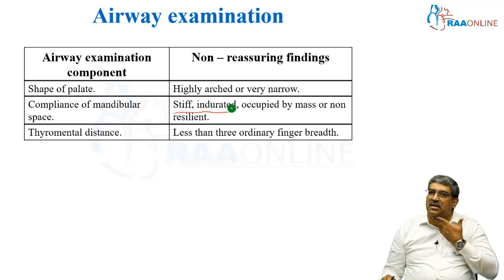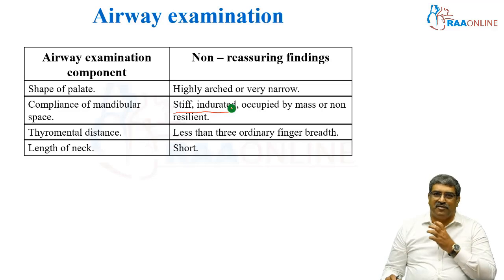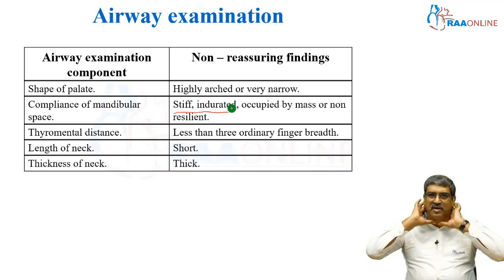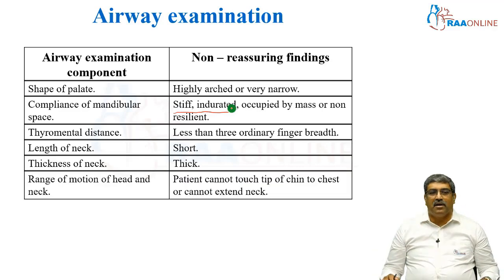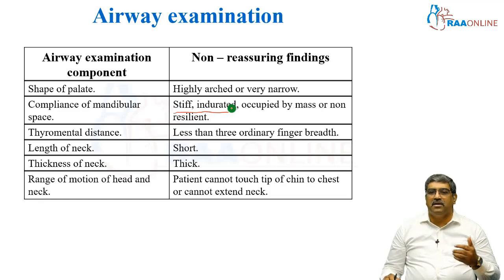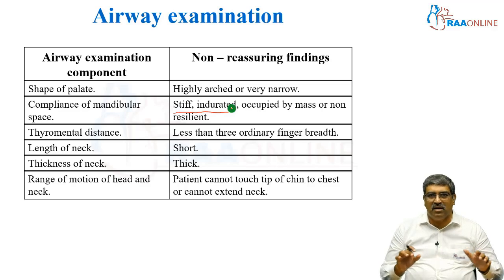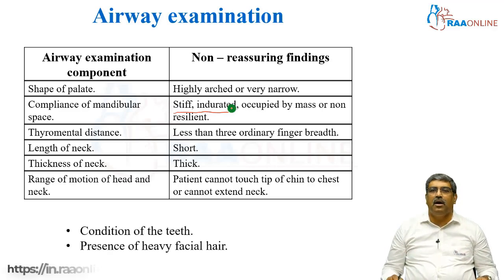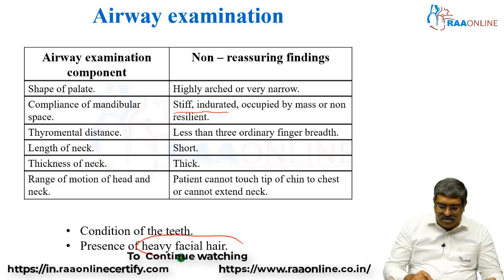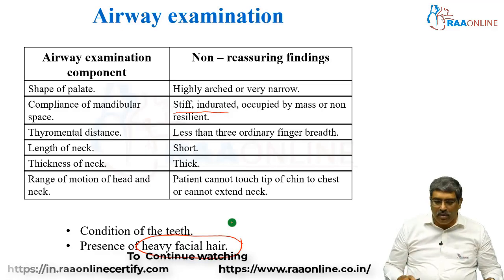Thyromental distance — if it is less than 3 finger breadths, it is not good. Length of the neck — if there is a short neck, it is going to be a difficult intubation. Thickness of the neck — if it is thick, it is difficult. Range of motion of the head and neck — if the patient cannot touch the chin to chest or cannot extend the neck, those things are going to be really difficult. And lastly, you have to look at the condition of the teeth and the presence of orofacial air. Presence of orofacial air is not good.